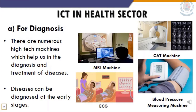In the health sector, ICT is used for diagnosis. Numerous high-tech machines help in diagnosing and treating diseases at early stages. Examples include the MRI machine which provides detailed reports, the CAT machine which provides three-dimensional images, ECG, and blood pressure measuring machines. There are many other equipment that use ICT in health care.